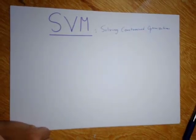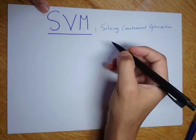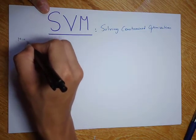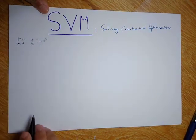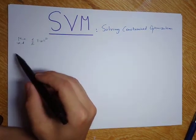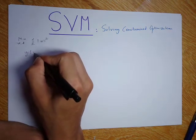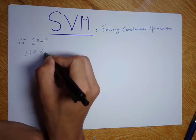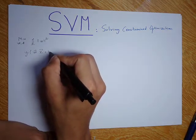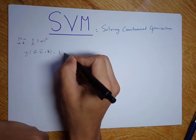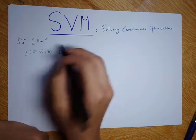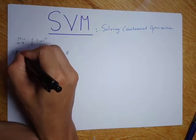Hello everyone! In the previous video about the SVM we ended up with a constrained optimization problem to find the widest margin that would separate our data. This was our constrained optimization problem: we wanted to find the minimum of a function for W and B, subject to the constraint Y_i multiplied by W dotted with X_i plus B, minus 1, being higher or equal than 0.